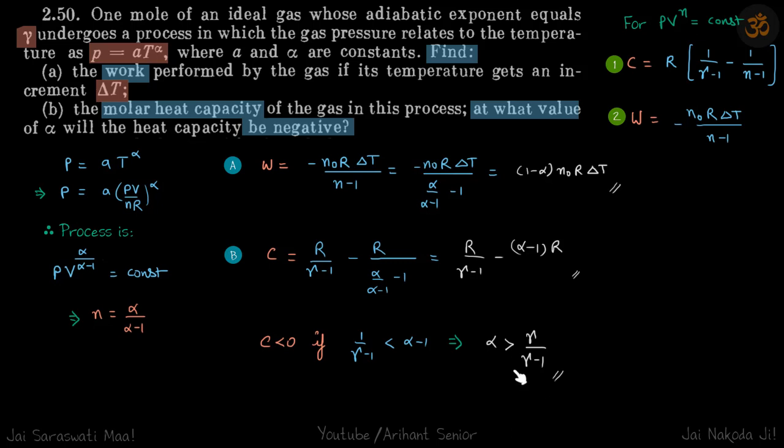What will happen? If the heat capacity is negative, that means when you're giving heat, the temperature is going down. It's counterintuitive, but it can happen in certain processes. When heat capacity is negative, you're giving heat but temperature decreases, so dQ/dT will be negative.